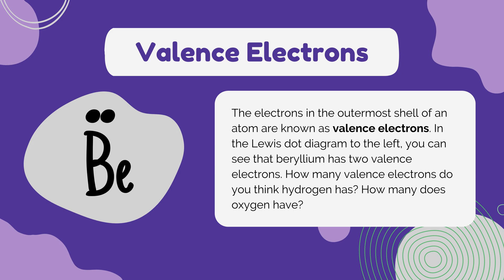The electrons in the outermost shell of an atom are known as valence electrons. In the Lewis dot diagram to the left, you can see that beryllium has two valence electrons. How many valence electrons do you think hydrogen has? How many does oxygen have?